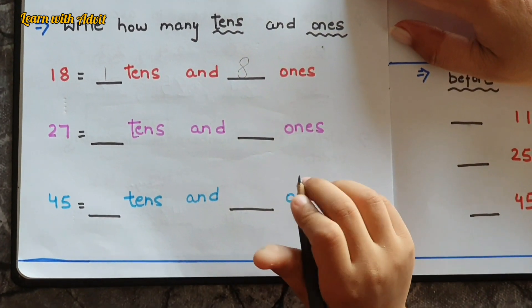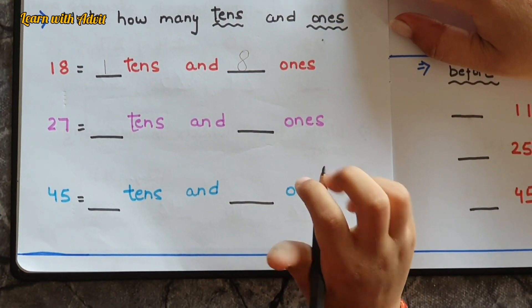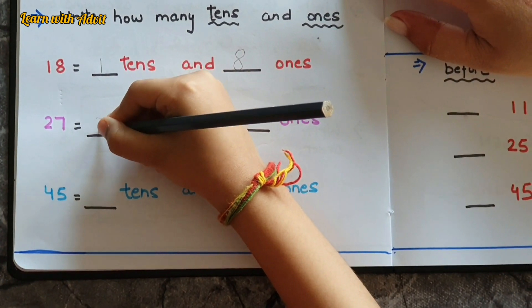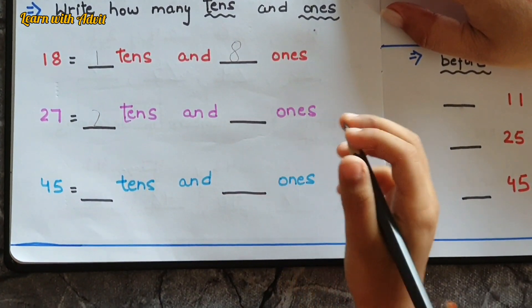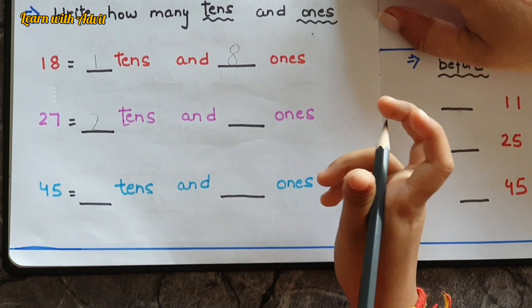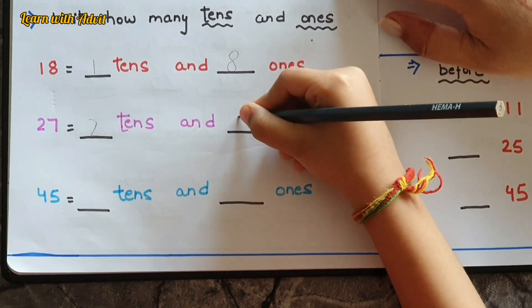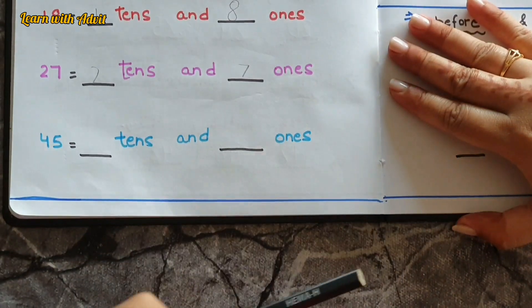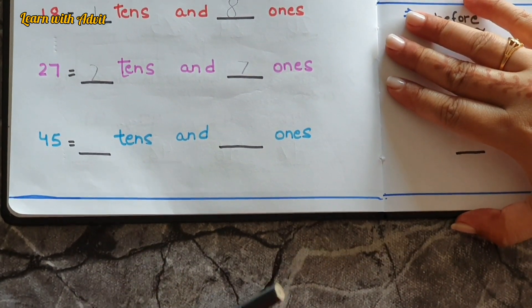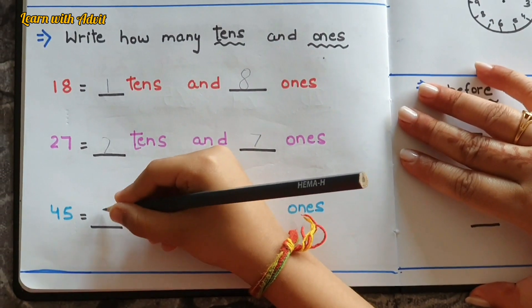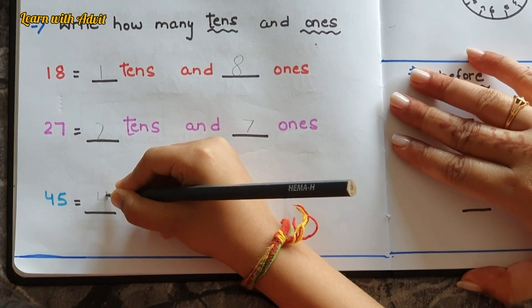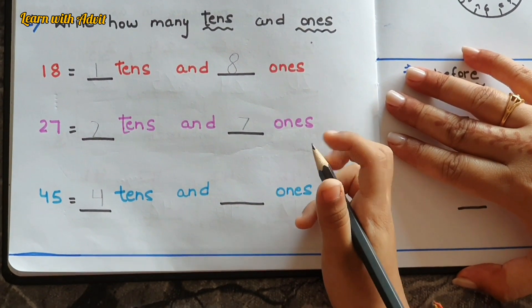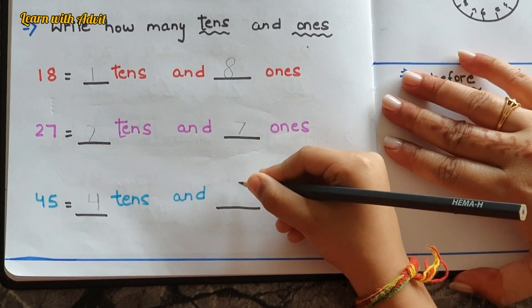27 — that means we need two tens and seven ones. Very good! 45 — so for 45 we need four tens and five ones. Very good!